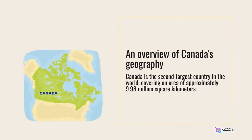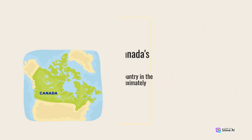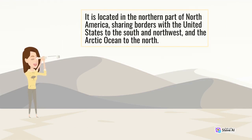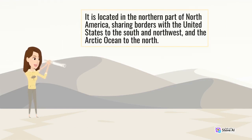An overview of Canada's geography. Canada is the second largest country in the world, covering an area of approximately 9.98 million square kilometers. It is located in the northern part of North America, sharing borders with the United States to the south and northwest, and the Arctic Ocean to the north.